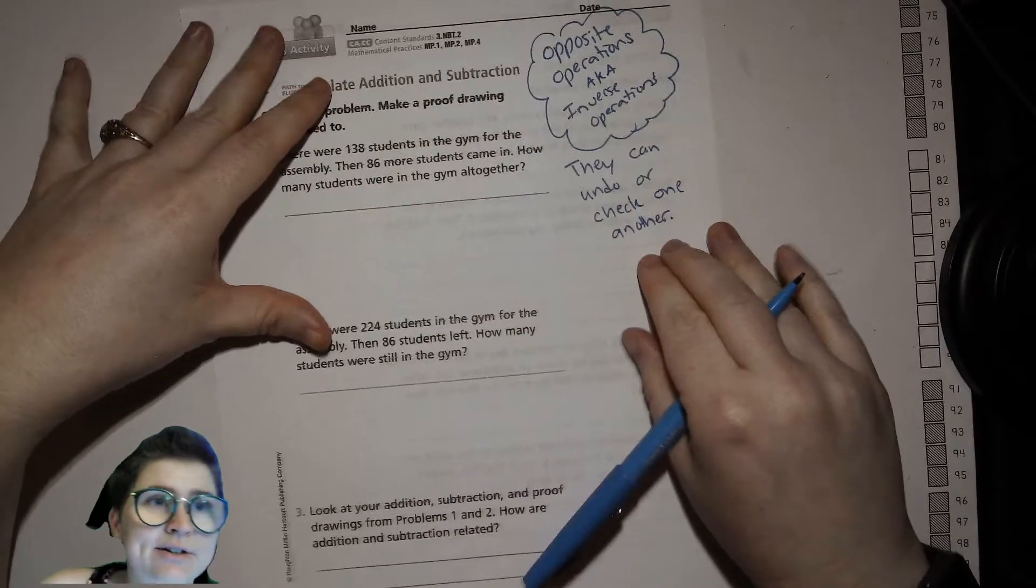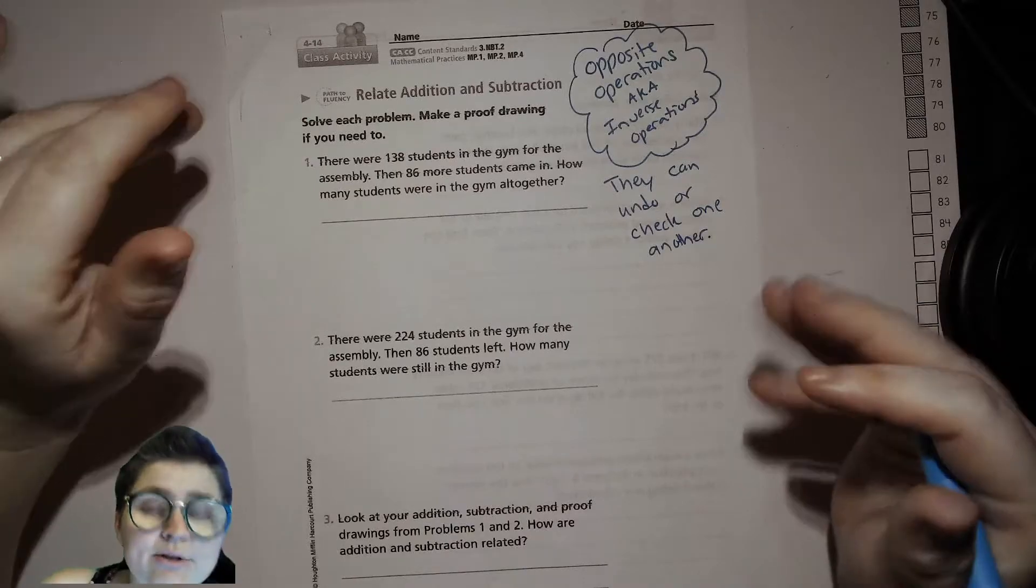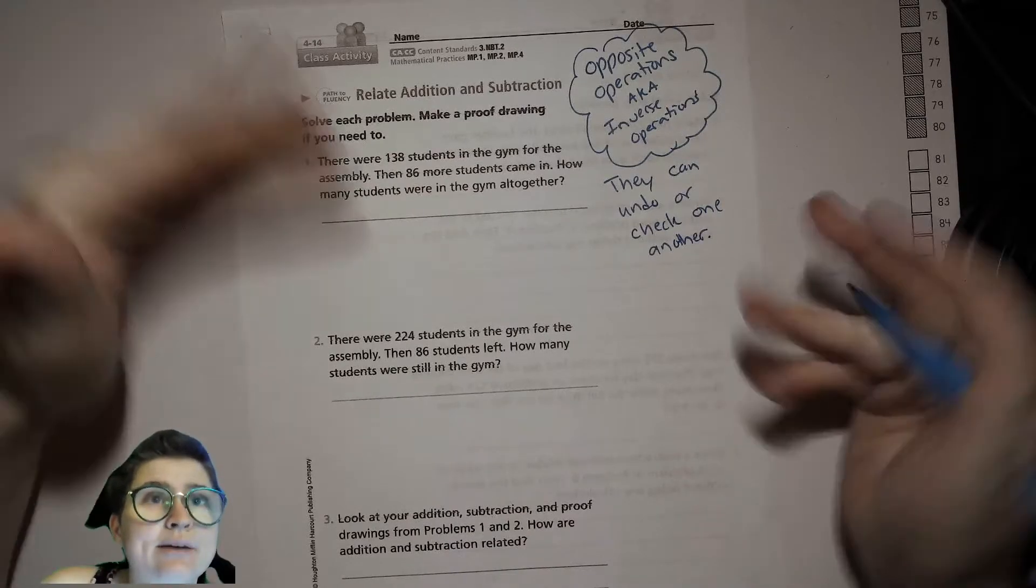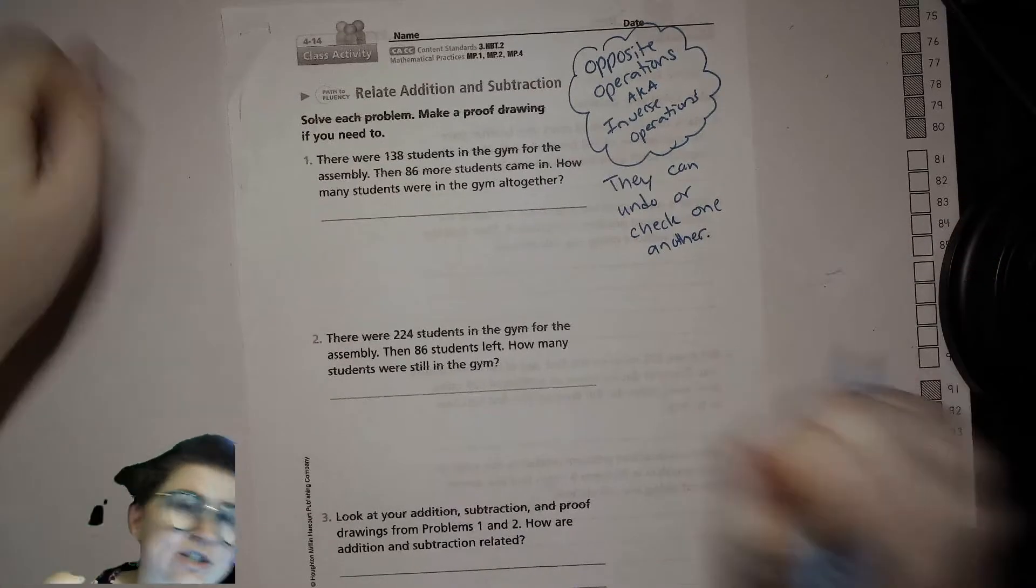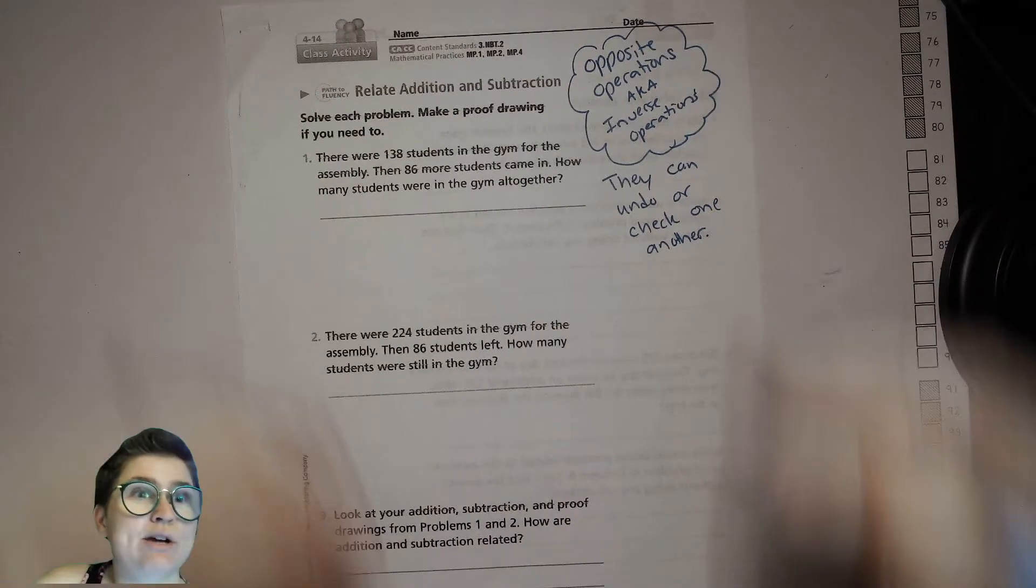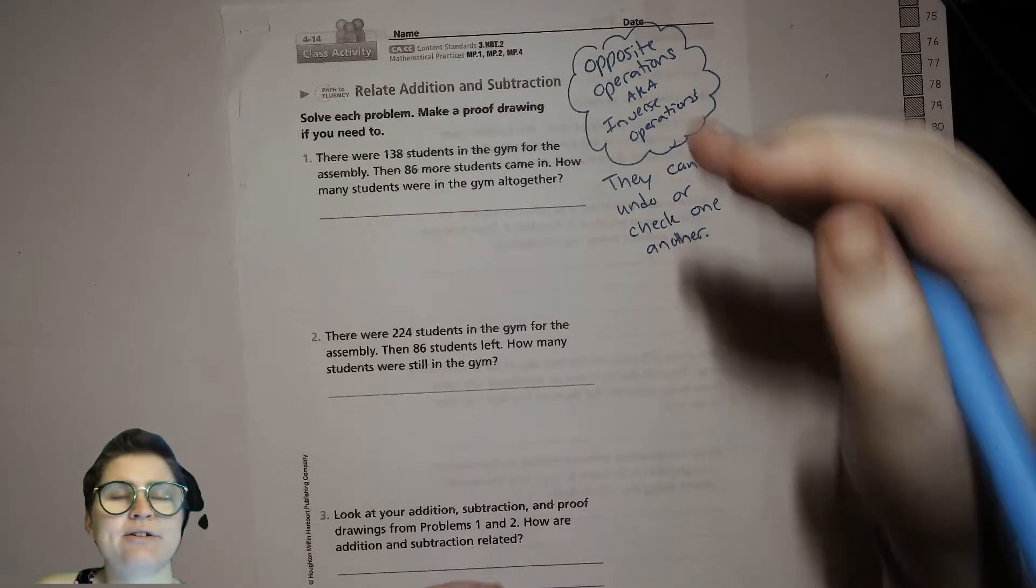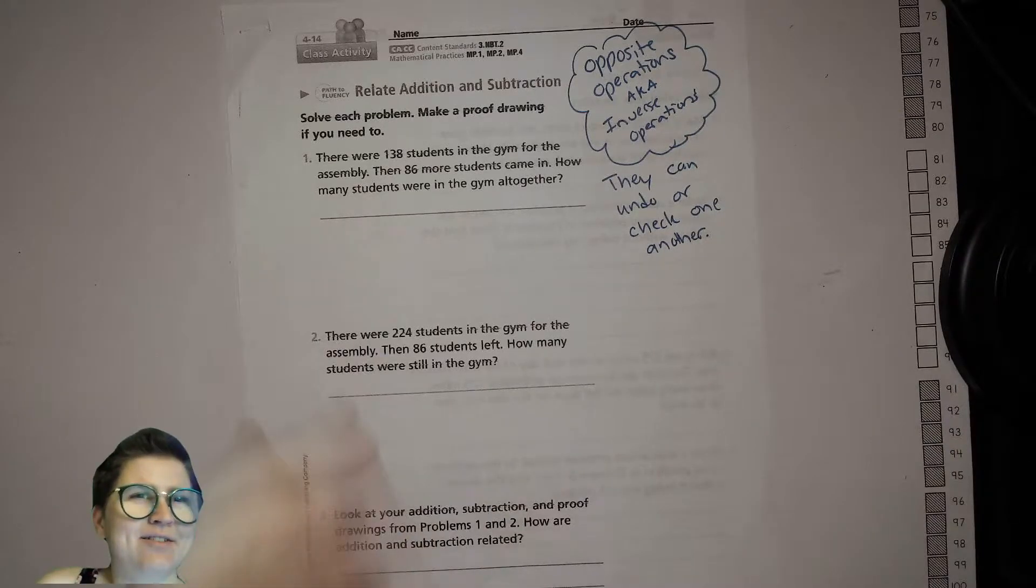This idea right here is what this lesson is about, so I want you to be thinking about that relationship between addition and subtraction, how you can use one to check the other one, or how they're kind of moving in the opposite directions. One is adding more and the other is taking away, and they can cancel each other out or undo one another.